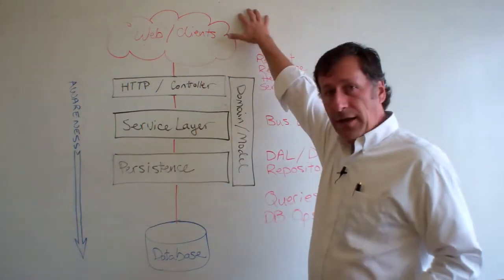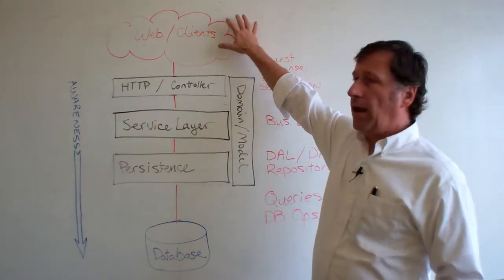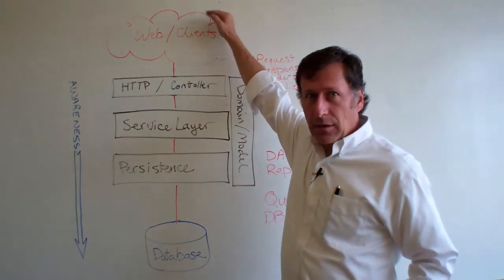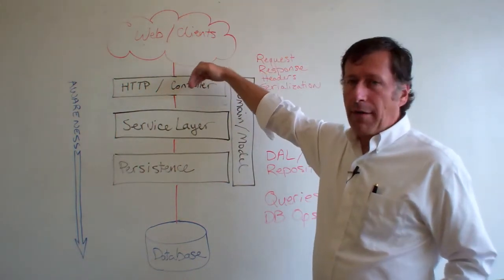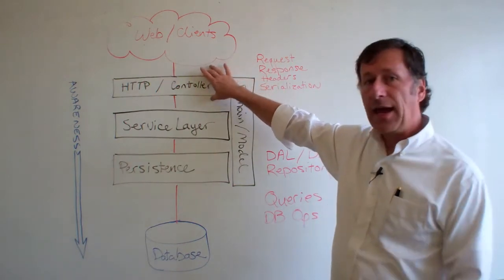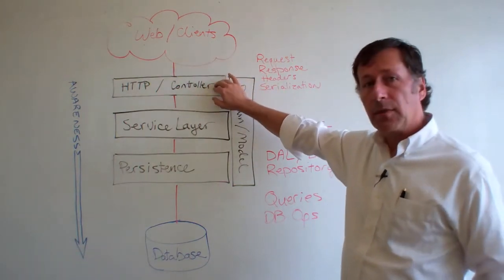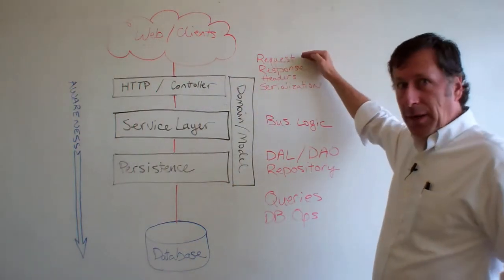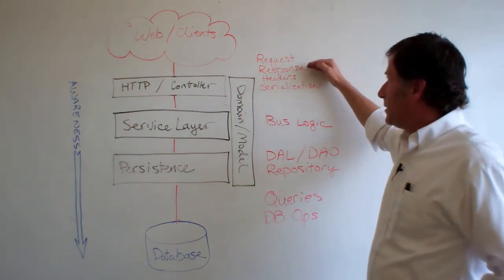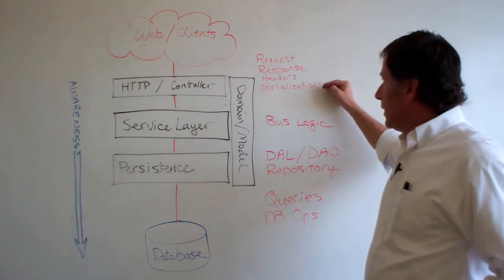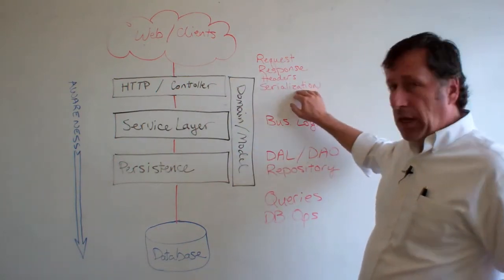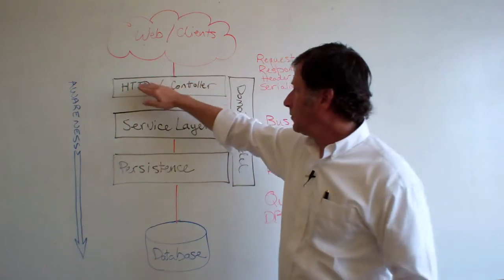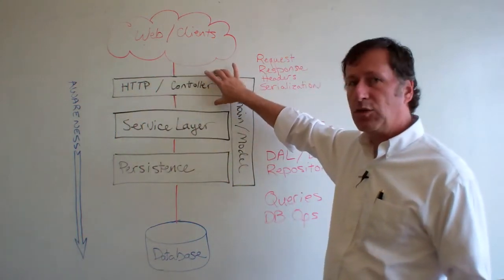So on the outside, we have, of course, the web. That's our clients that are calling into our API. The first thing that hits is our controller. That's our HTTP layer. So it knows how to manipulate and read requests and responses and headers. It also knows how to create our model via serialization. Okay, so that's what goes there.